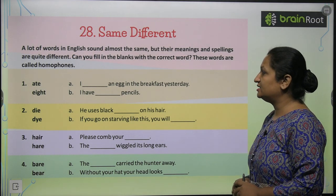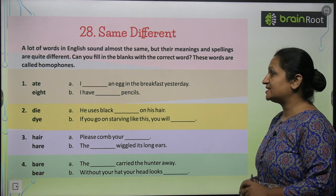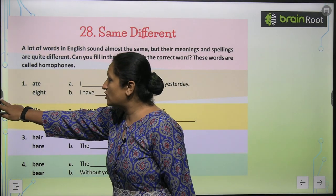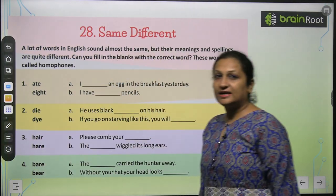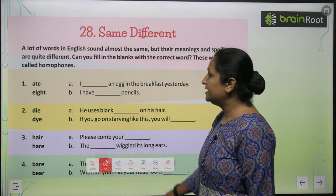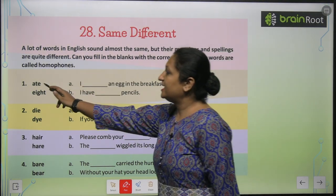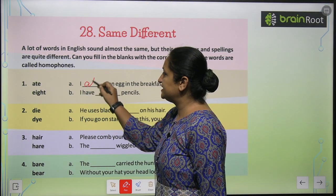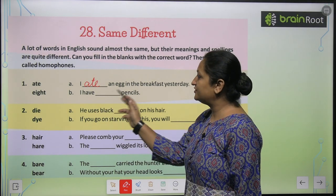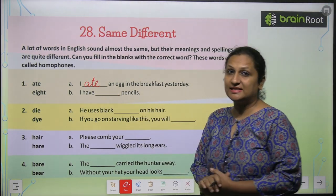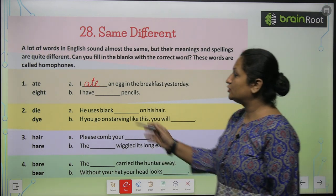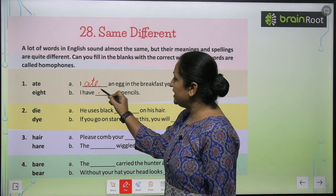I dash an egg in the breakfast yesterday. Isse aapko easily pata chal raha hai — isme hum fill karenge 'ate', A-T-E. Now see part B: I have dash pencils. Yahaan par number ki baat ki ja rahi hai, toh you will put 'eight' here.